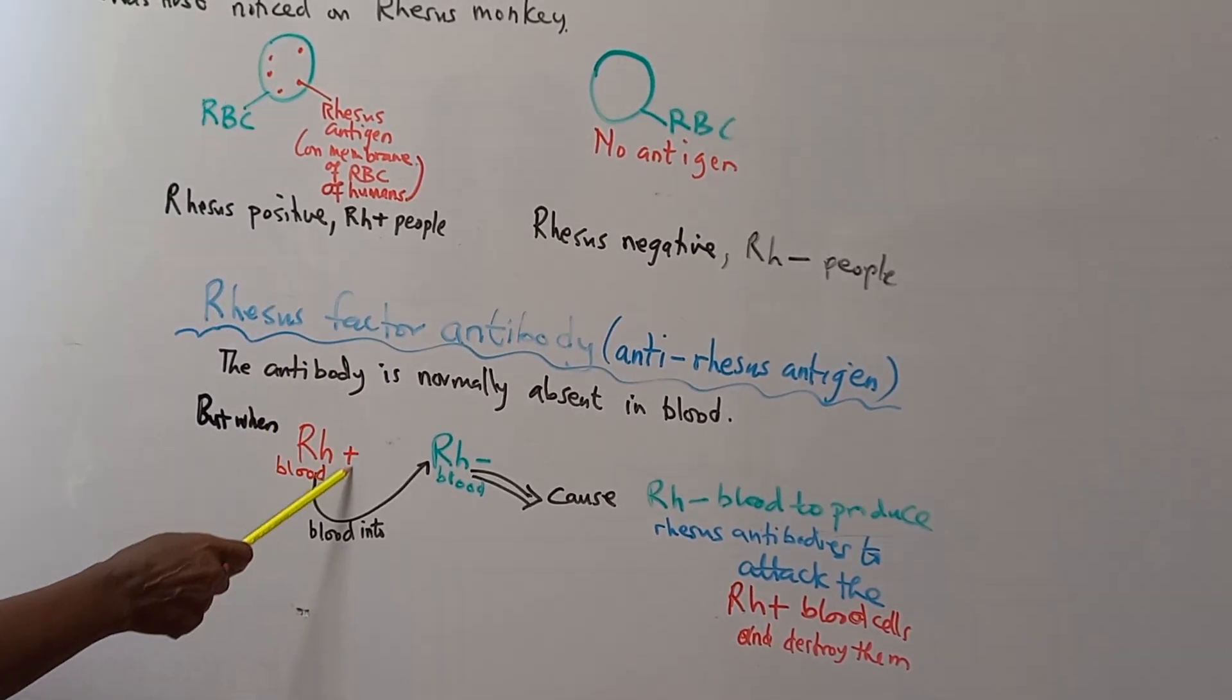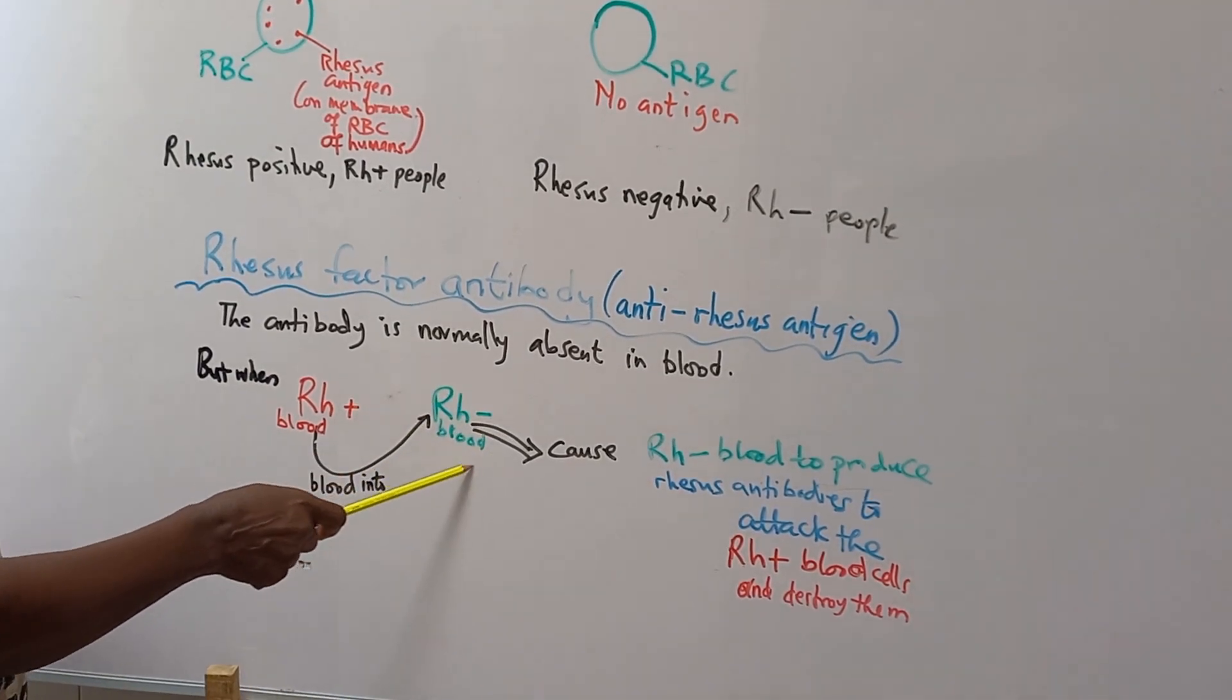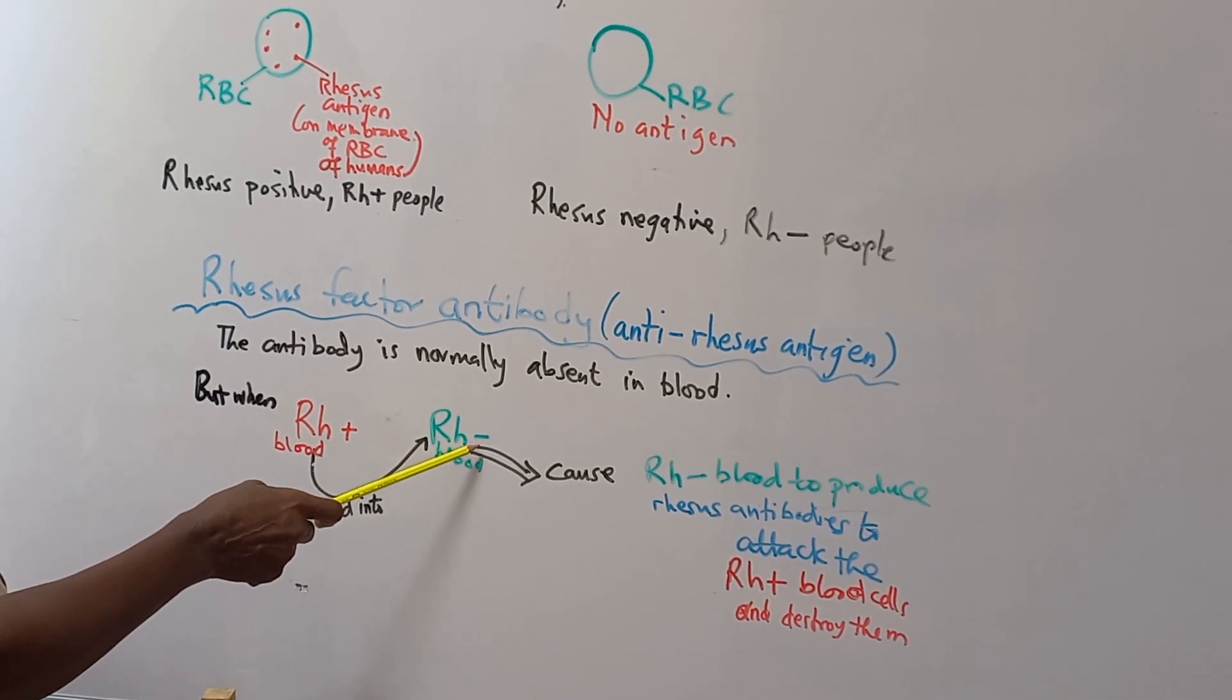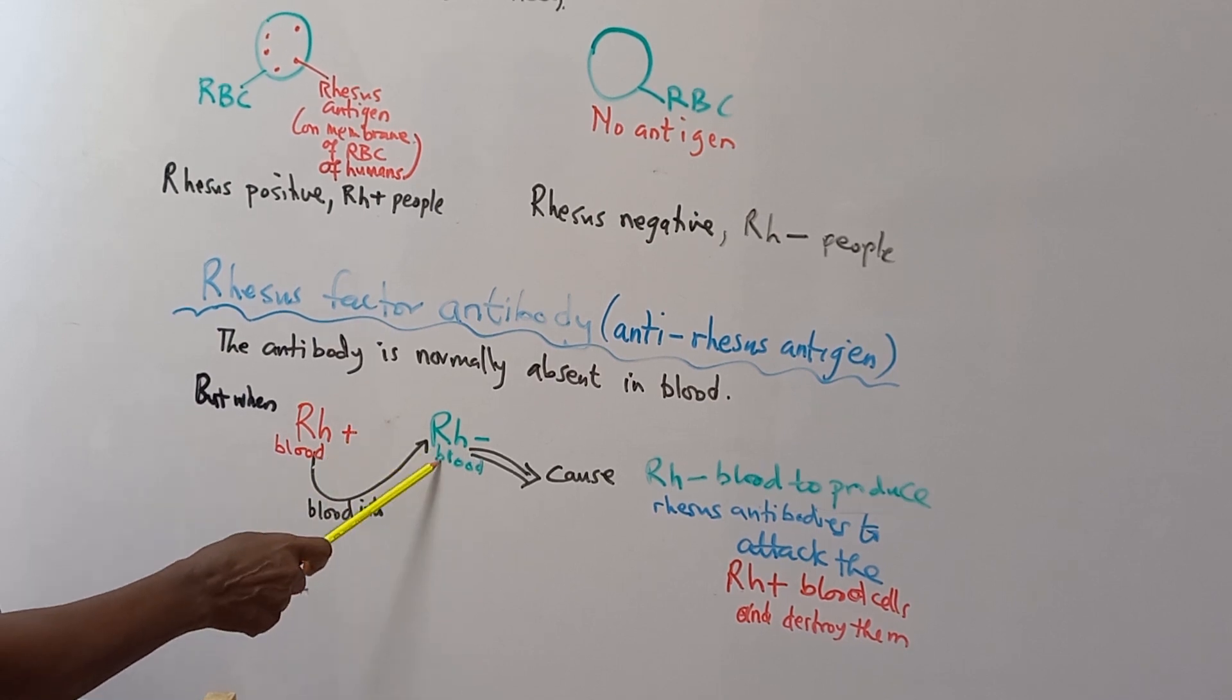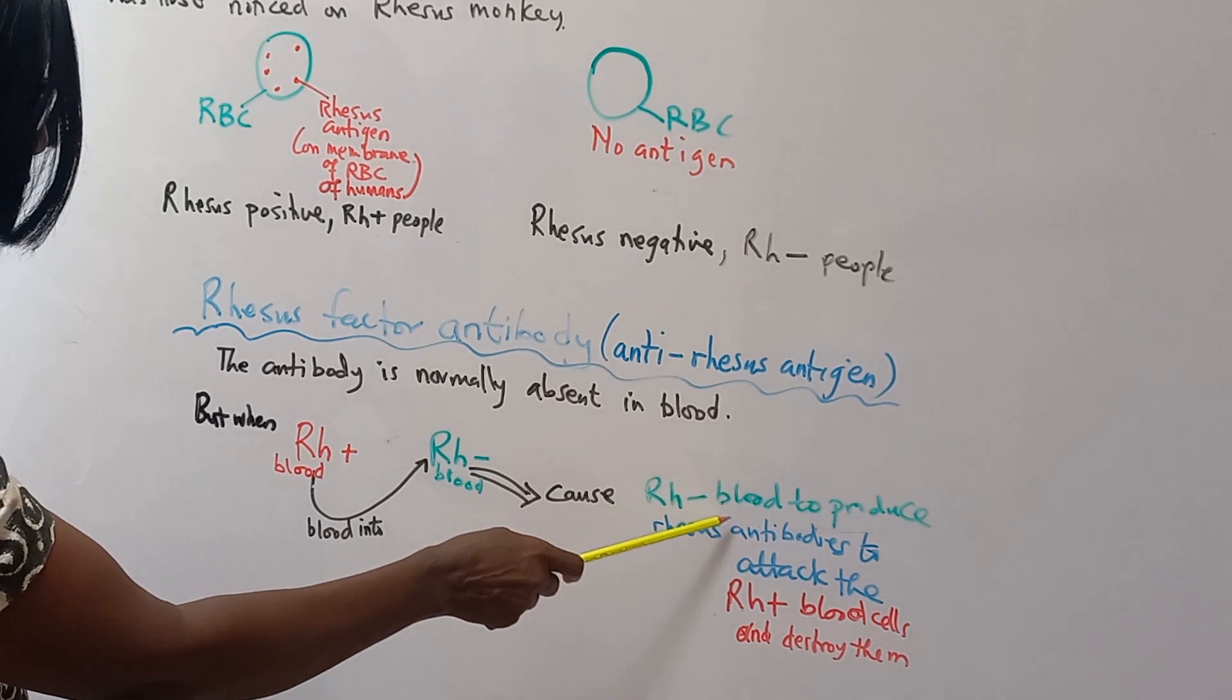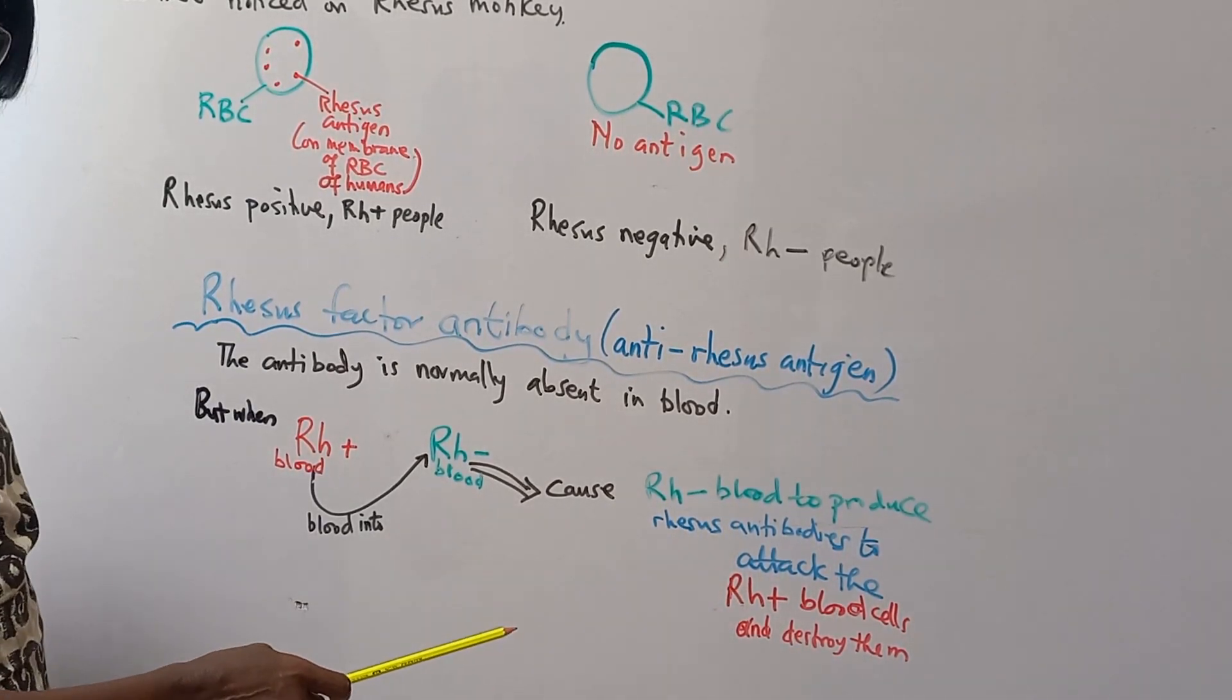But when people with Rhesus positive blood give blood to people of Rhesus negative, the Rhesus negative will realize that there's a foreign matter with foreign antigen here. And so the Rhesus negative blood will form antibodies to attack the Rhesus positive blood cells.